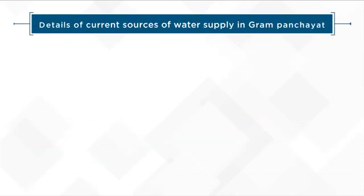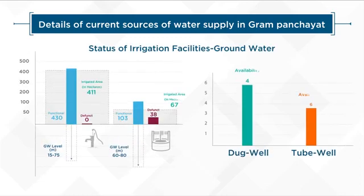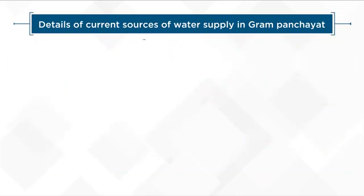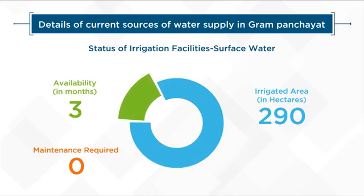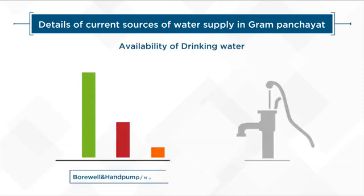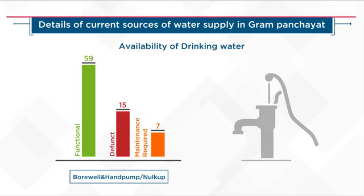Details of current sources of water supply in the Gram Panchayat provide information that will help in planning the proper utilization and maintenance of these sources as per the required demand of water. Such information will also lead you in making plans for alternative water sources as well.